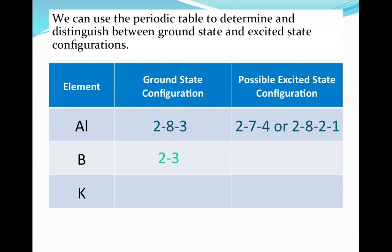Just keep that in mind, and we'll come back to that when we get to potassium. Boron has a configuration of 2-3, so I could have a possible excited state configuration of 1-4 or 2-2-1. As you can see, I still have the same total. The ground state started with 5. I have to make sure my excited state also has a total or sum of 5. So I'm just moving them. I'm not adding or taking away.